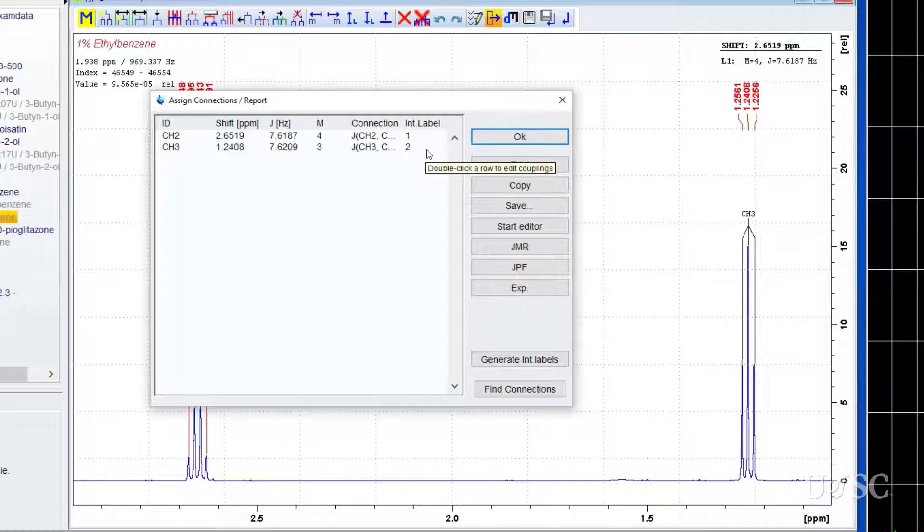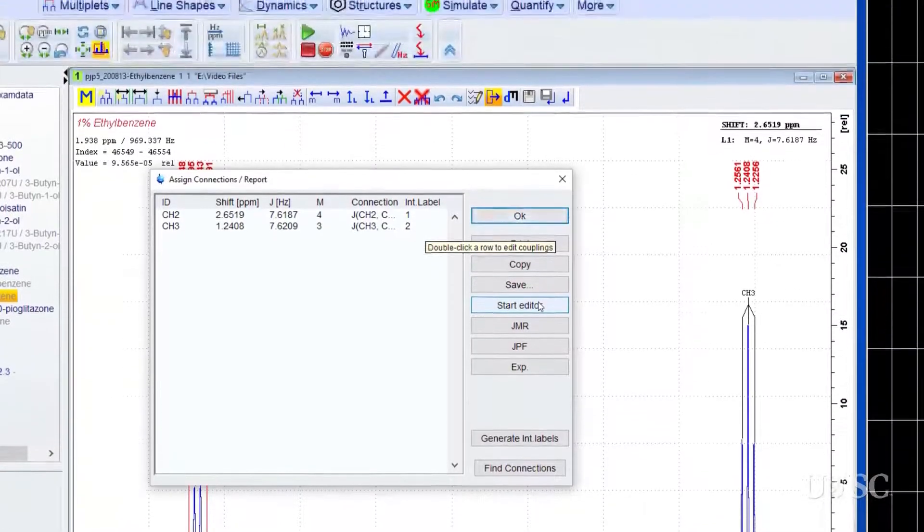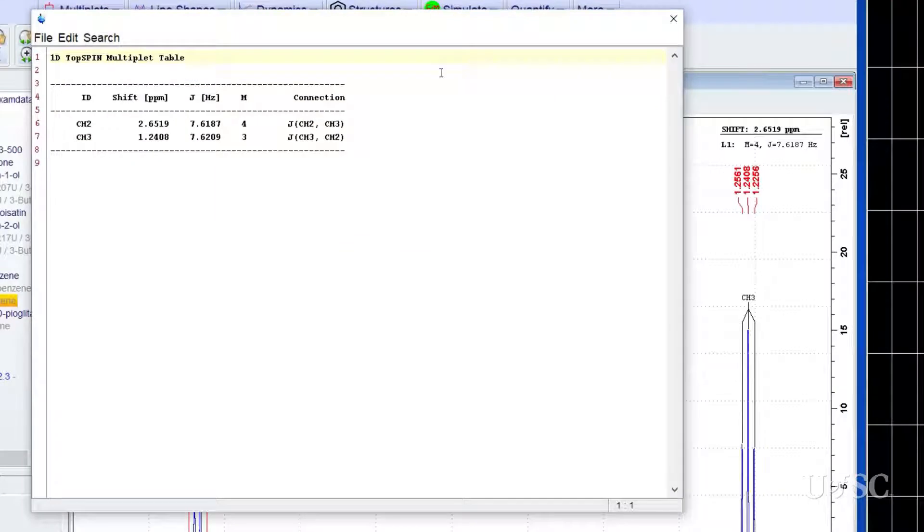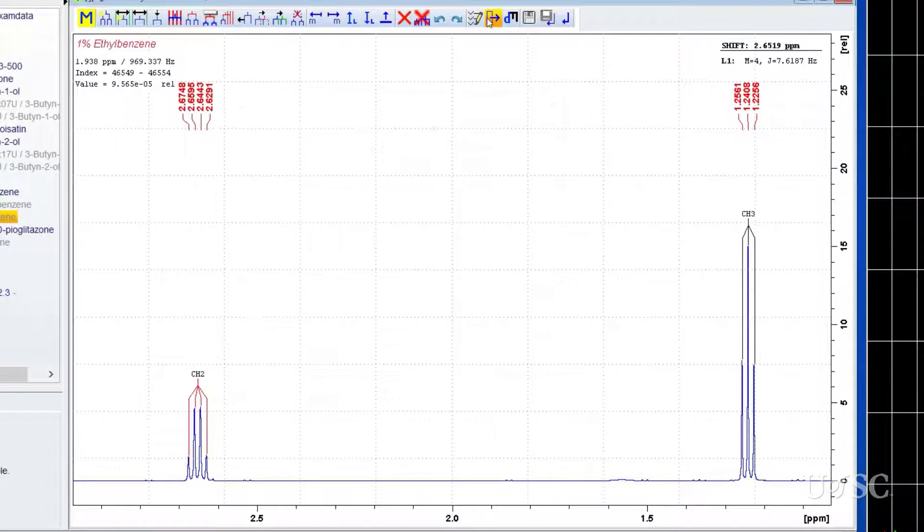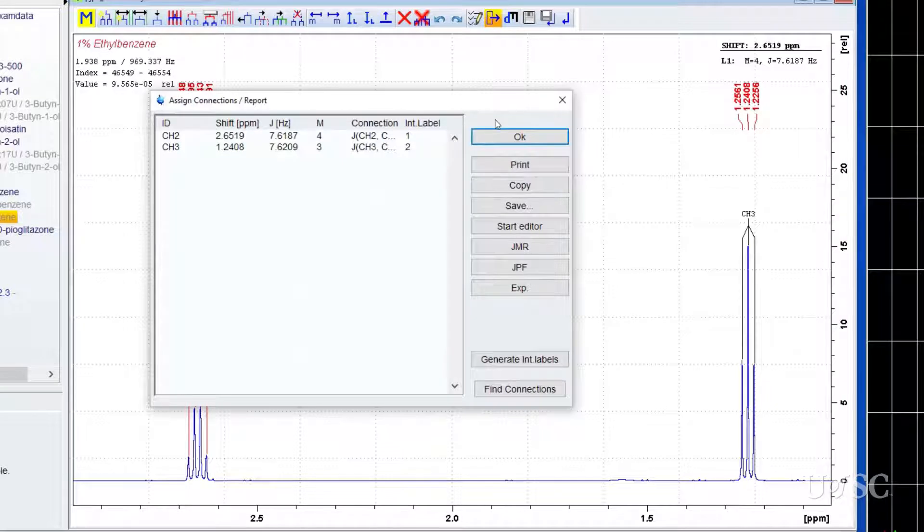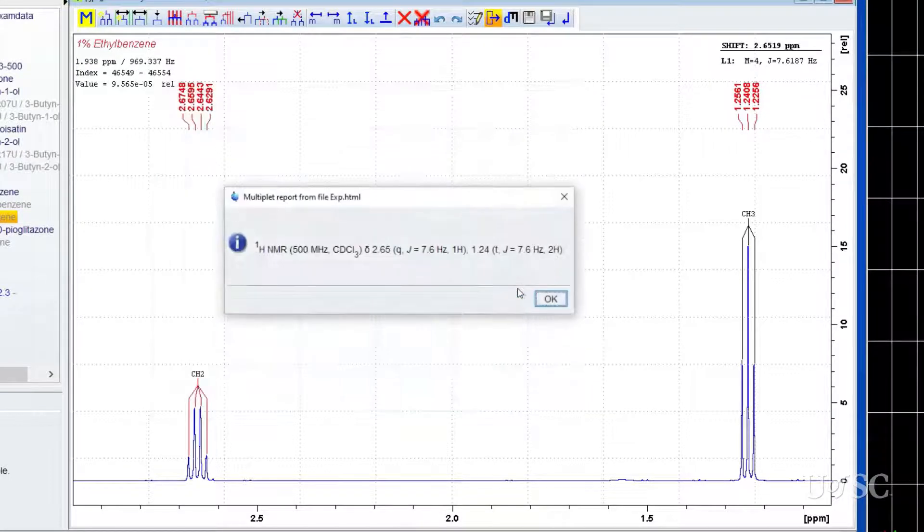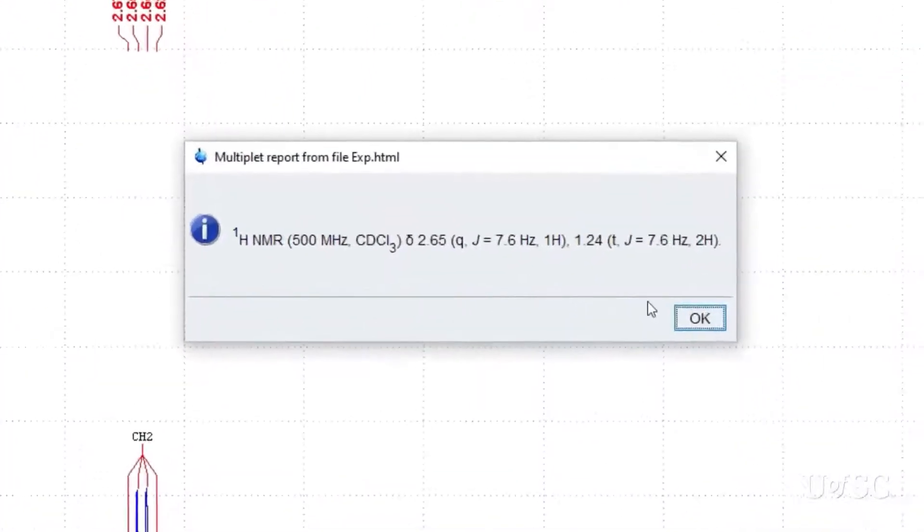To obtain an editable table, click on the start editor button. This editor will allow you to copy and paste this information into other applications. Going back into the report, we will open up perhaps the most useful output option of the multiplet analysis tool. Clicking on the button labeled EXP brings up the results formatted as what you use for most journal manuscripts.